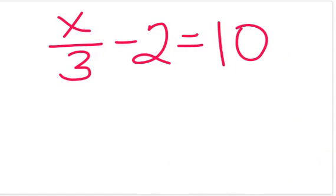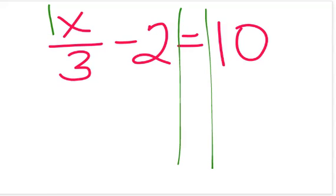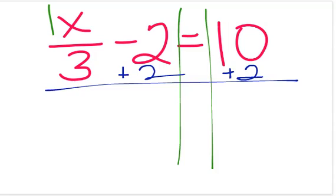For our next problem, there is no coefficient with the x, so we have to remember it's the invisible 1. Let's start out like we'd solve any two-step equation. In fact, why don't you hit pause now, solve it on your own, and then push play to see if you're correct. All right, let's see if you've solved this problem correctly. Let's start out by adding 2 to each side of the equation.